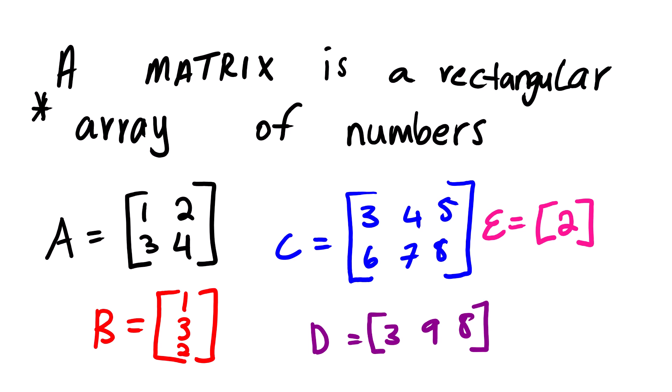You can see matrix A having one, two, three, four numbers. We also have matrix C which is three, four, five, six, seven, eight. You can see the difference — we have rows and columns. The first one has two columns and two rows. Matrix B has only one column and three rows. Looking at C, we have two rows and three columns. Matrix D has one row and three columns, and E has one column and one row. So these are different types of matrices.